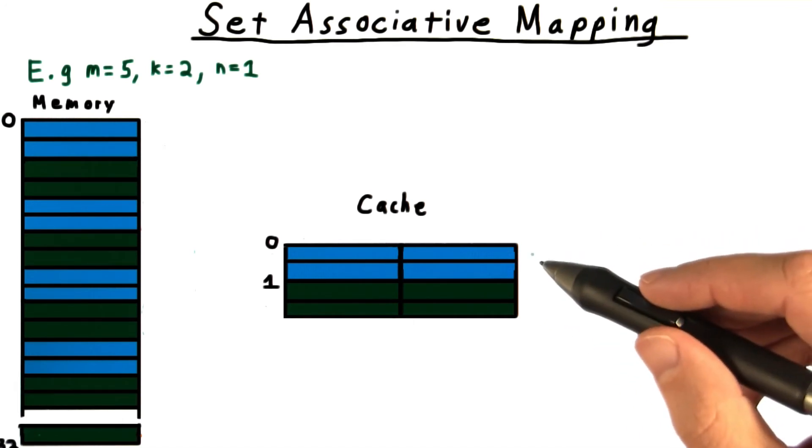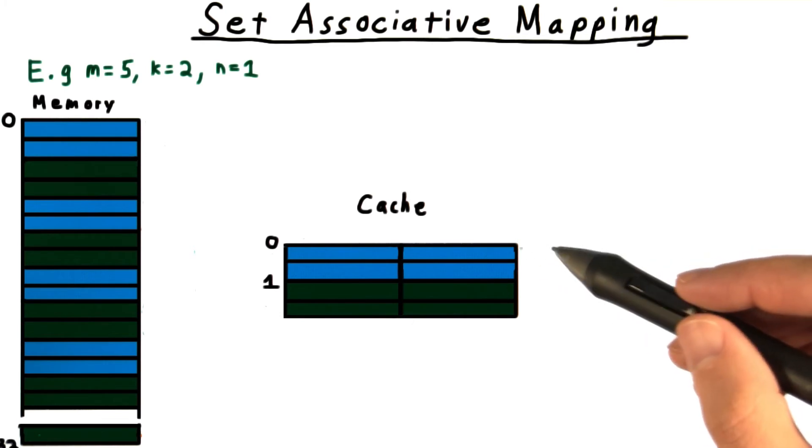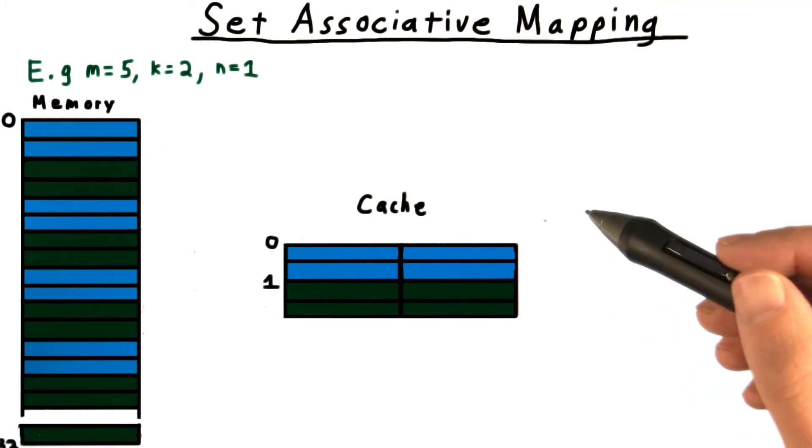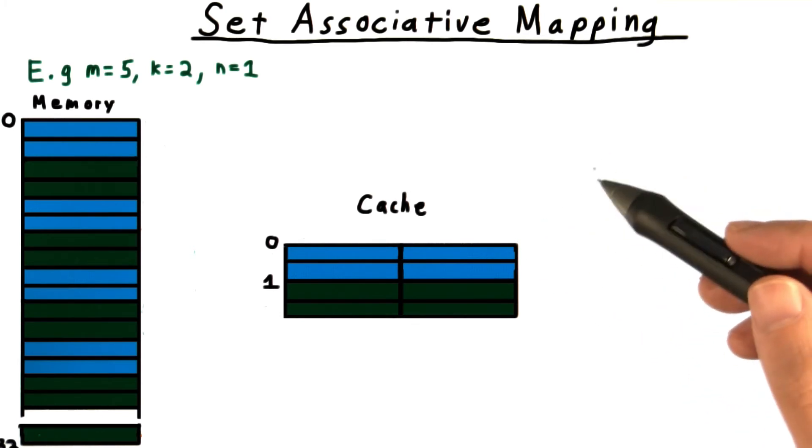The downside is that we have to check two tags now to see if we have a cache hit, but we are less likely to run into the problem where we are constantly evicting the memory we need from the cache.